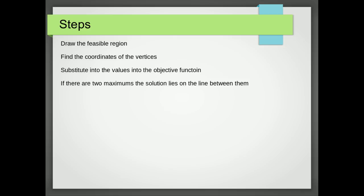However, this time, we're going to find two vertices that are adjacent to each other that give a maximum or sometimes minimum value. The solution to the problem are any points that lie along the line that are between those two points.